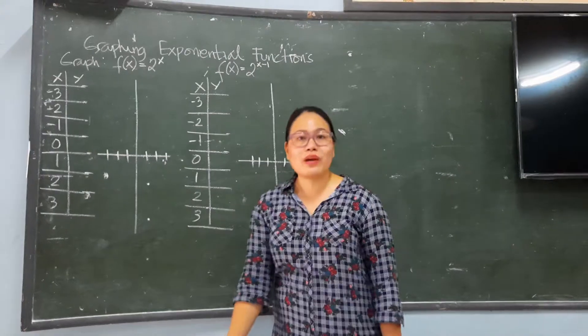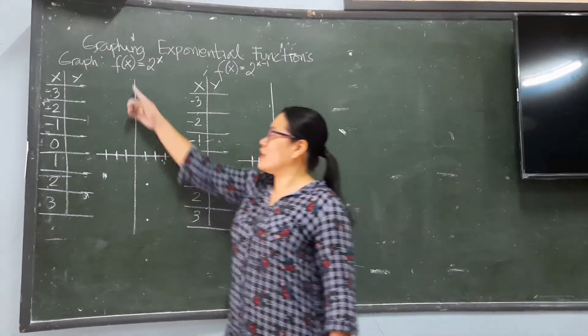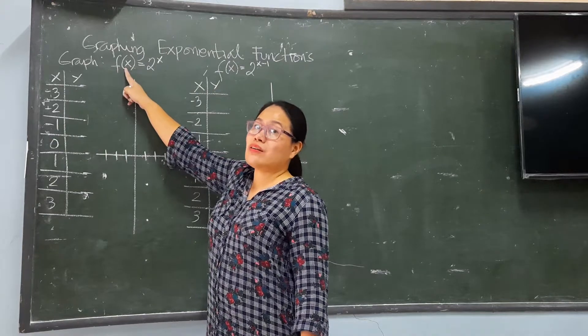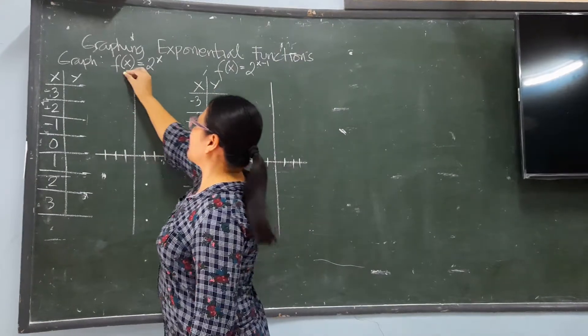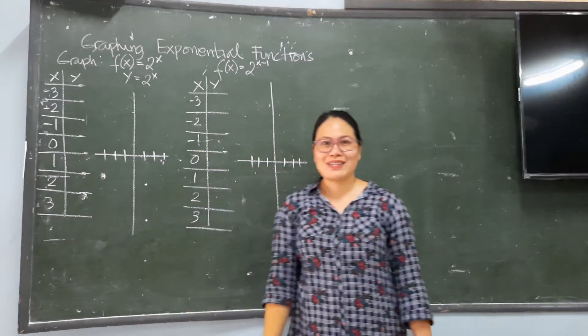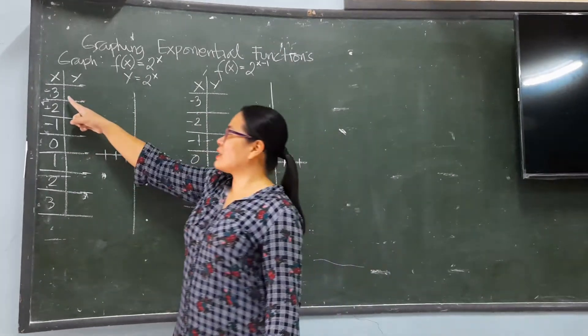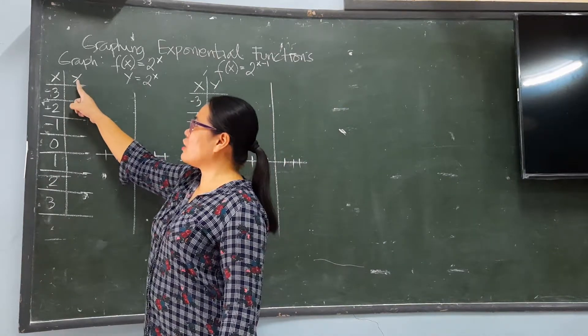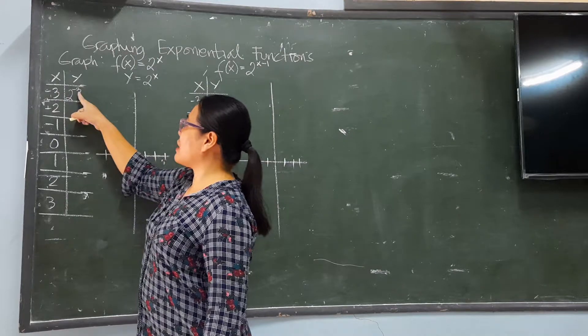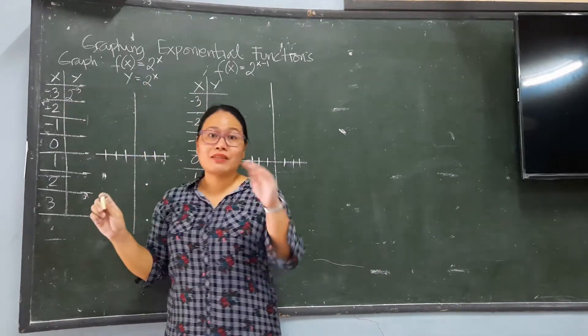F of X equals 2^X. Of course, you cannot solve this if the formation is like that. Change F of X to equation that becomes Y is equal to 2 to the power of X. So, in here, since there is a value of Y, that is 2 to the power of negative 3. That's exponent. Negative 3.